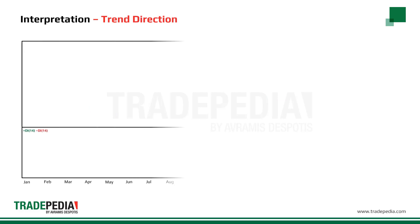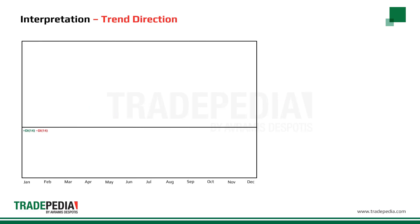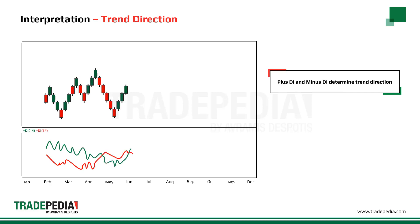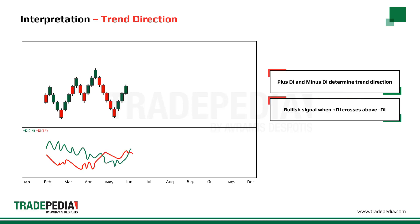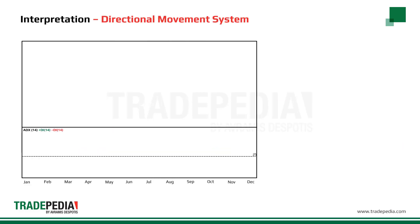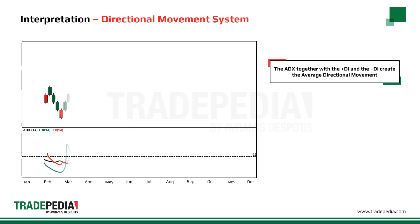As the ADX does not show the trend direction, we use the plus DI and minus DI to determine trend direction. A bullish signal is given when the plus DI crosses above the minus DI. A bearish signal is given when the plus DI crosses below the minus DI. The ADX together with the plus DI and the minus DI create the Average Directional Movement System and should be interpreted together.